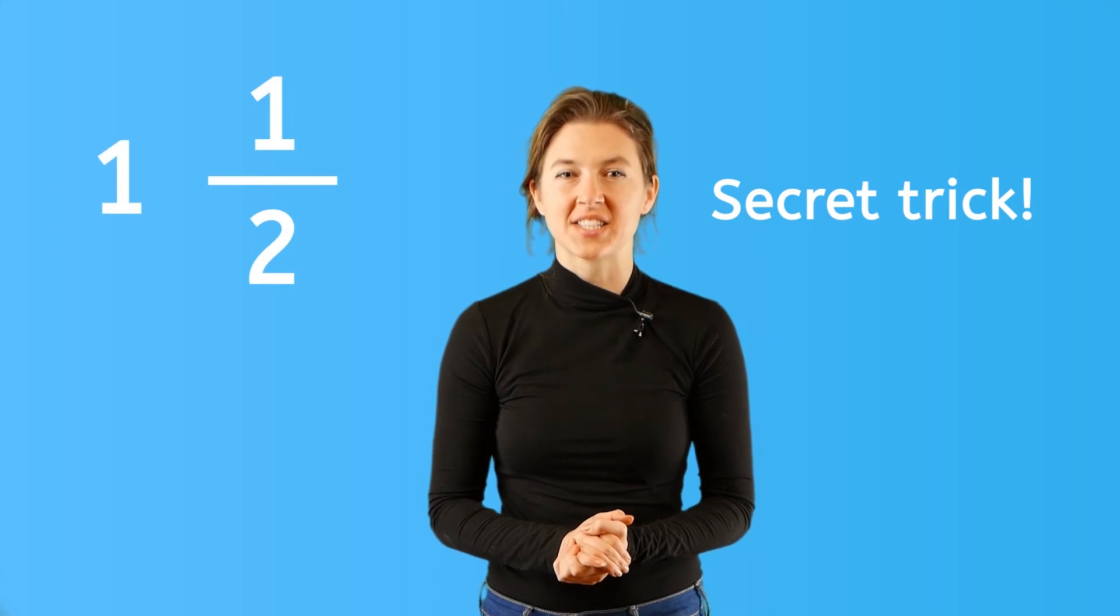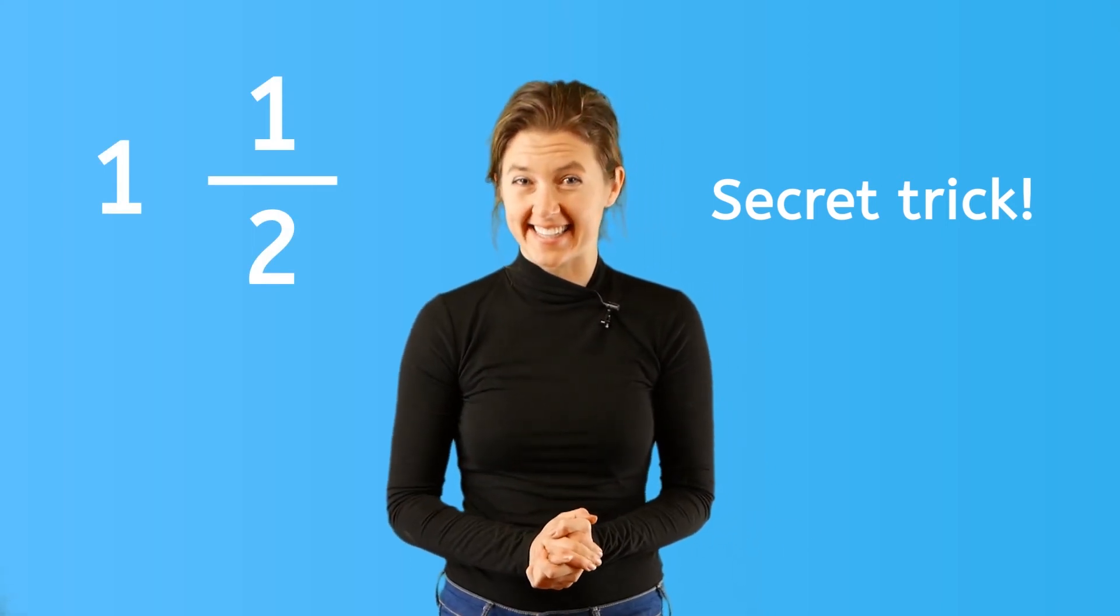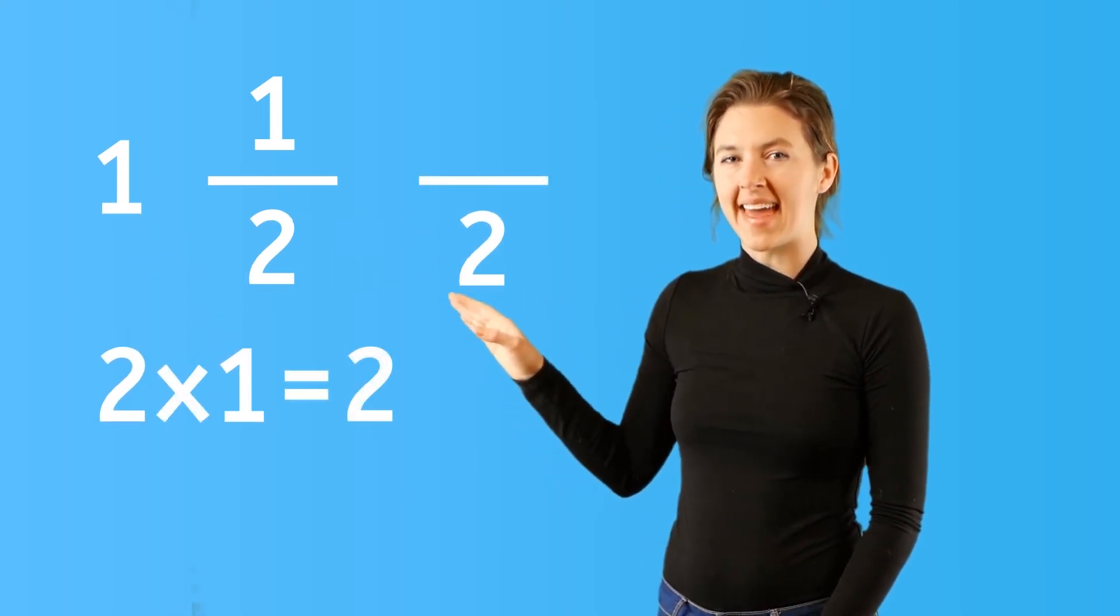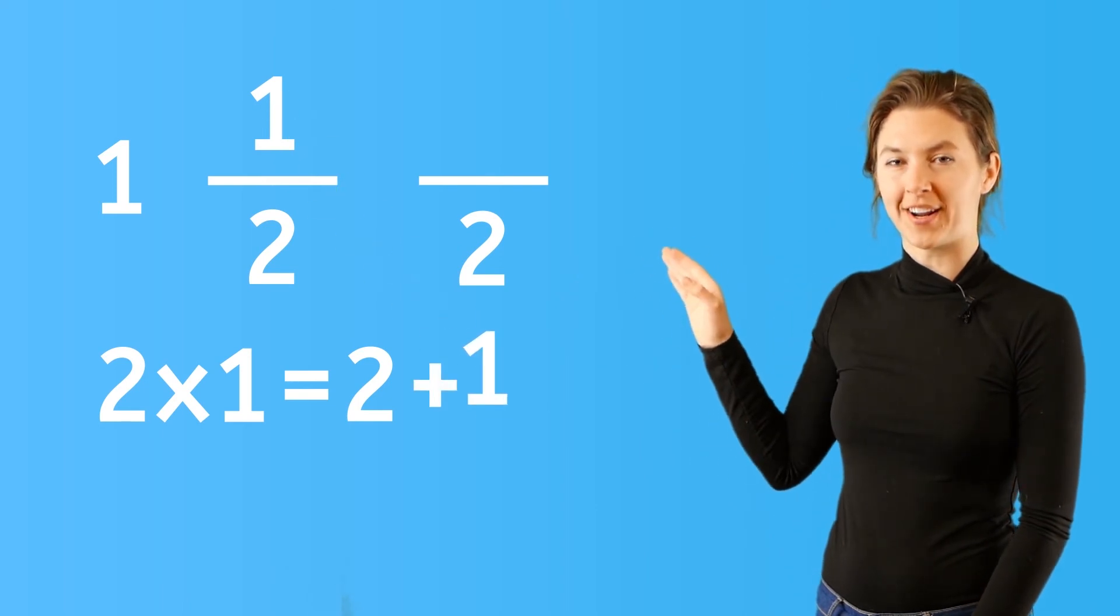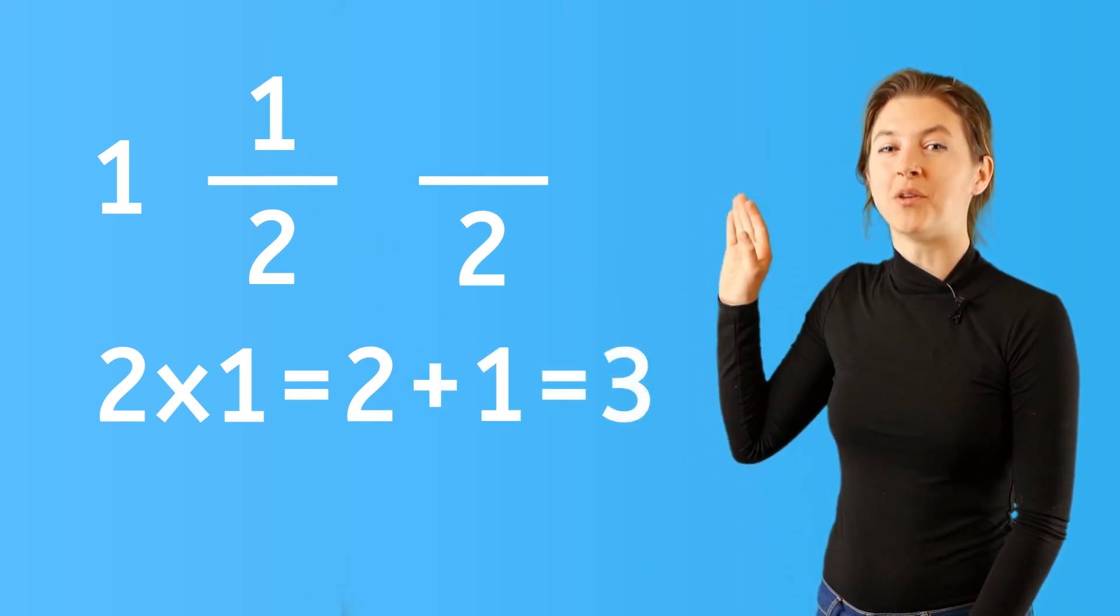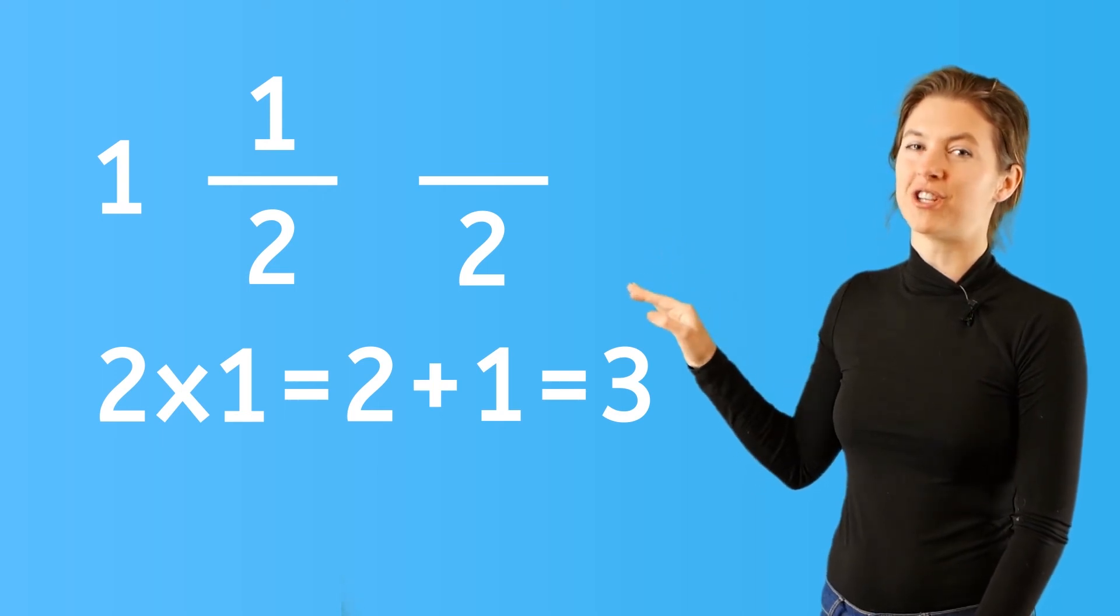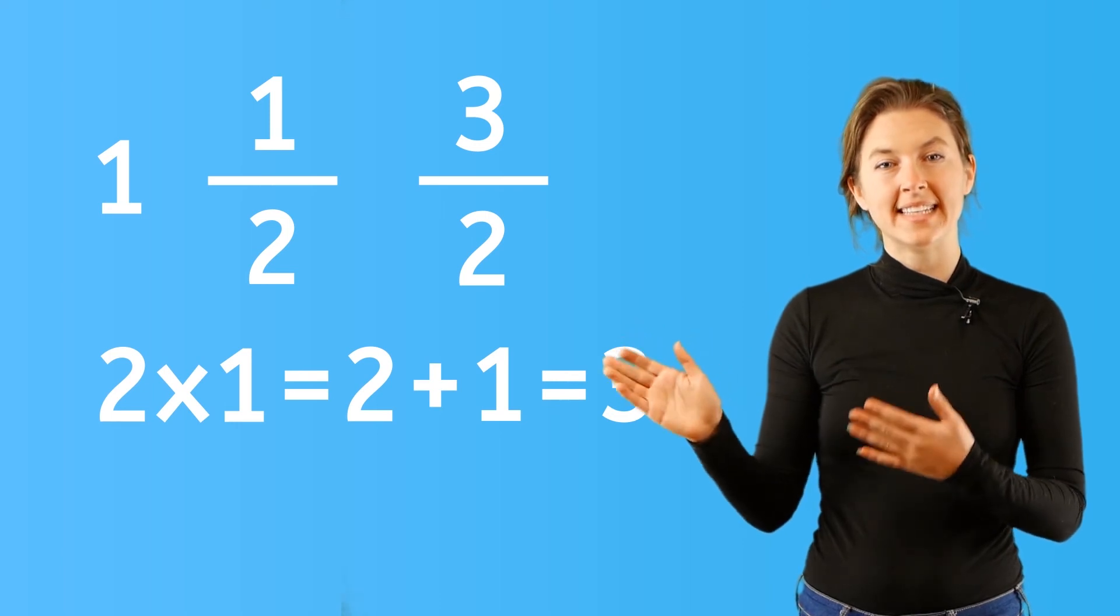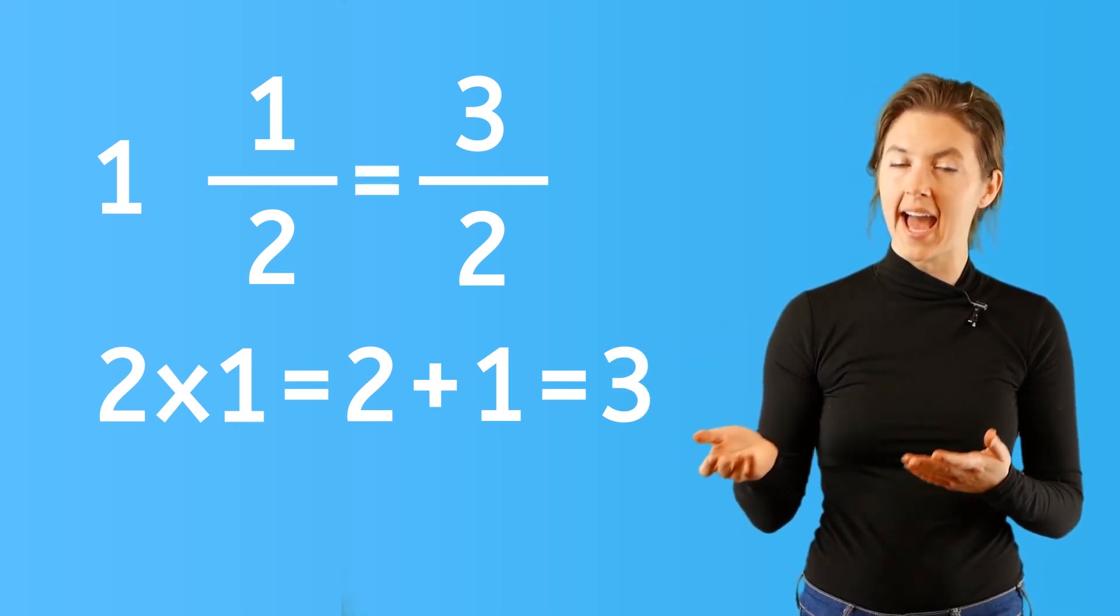Okay, I'll let you in on a little trick that makes changing numbers to improper fractions without drawing a picture really easy. Are you ready to learn? Okay, this trick is to multiply the denominator by the whole number and then add the numerator and you place that answer over the original denominator. So one and a half is the same as three over two or three halves.